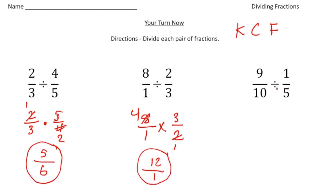Finally we have 9 tenths divided by 1 fifth. So again, I'm going to keep the 9 tenths as is. We're going to change that division to multiplication. And then we're going to flip the second fraction. And the reciprocal of 1 fifth is 5 over 1. And this problem we can reduce the 5 and the 10. We'll make this a 1 and make this a 2. And then finally we can multiply. 9 times 1 is 9. And 2 times 1 is 2. And I'm going to make this into a mixed number, which is 4 and a half. And there's our answer.